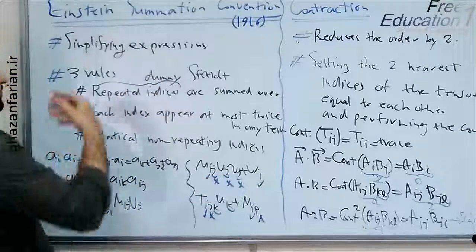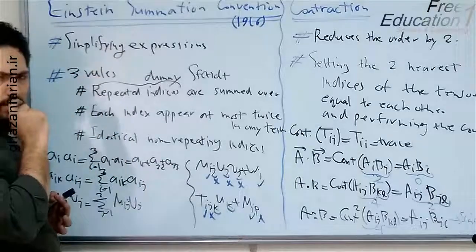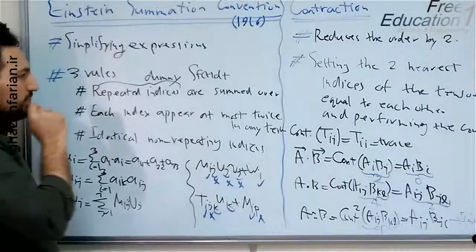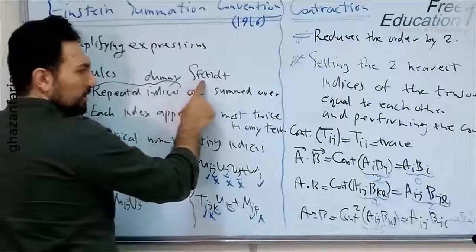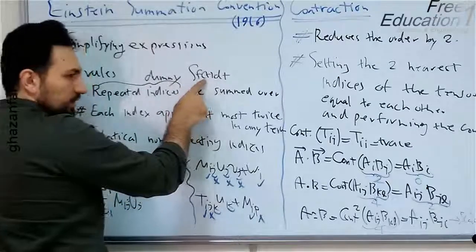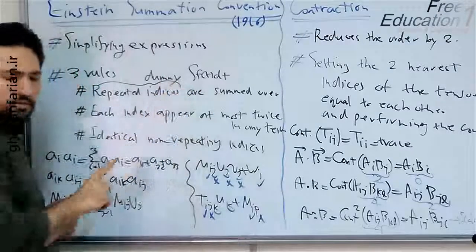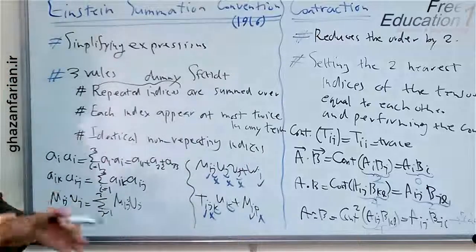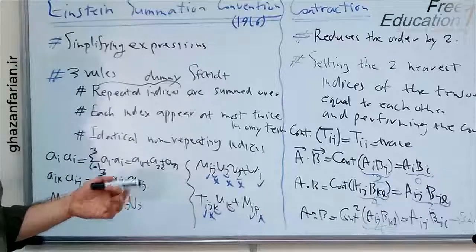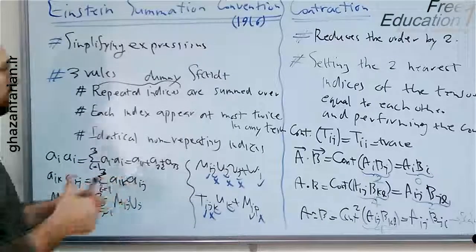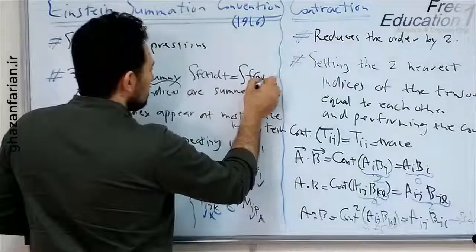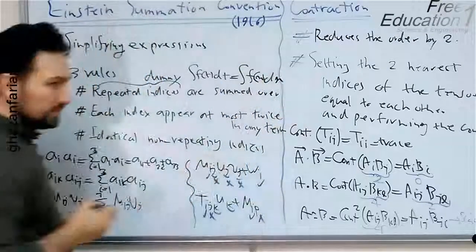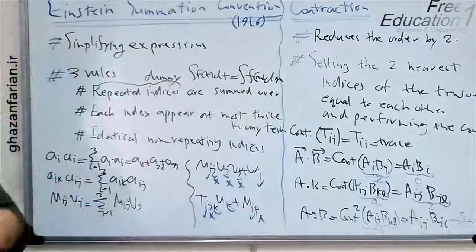When a dummy variable appears in integration — when we have the integration of a function — the variable t here is a dummy variable, so you can easily replace it with any other symbol. For example, this is equal to the integral of f(x) dx. This is the definition of a dummy variable.